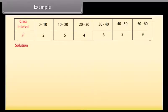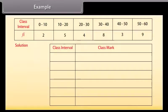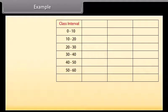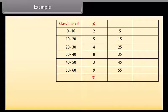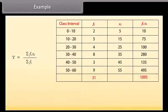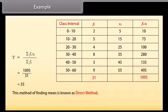Find the mean of the given data. Solution: First we find the class mark of each class interval using the formula: class mark equals (upper class limit + lower class limit) divided by 2. The first column has the class interval, the second has the frequency. The sum of the frequencies is 31. We find the class mark xi, then the product fi·xi, and finally the mean: x-bar equals summation of fi·xi divided by summation of fi, which equals 1095 divided by 31, which equals 35. This method is known as the direct method.